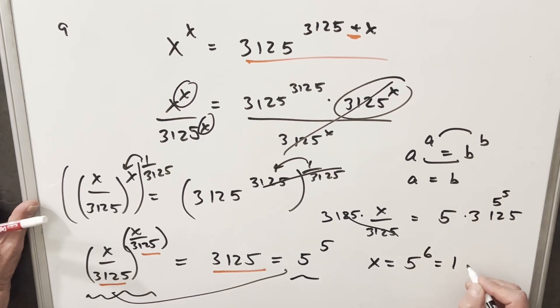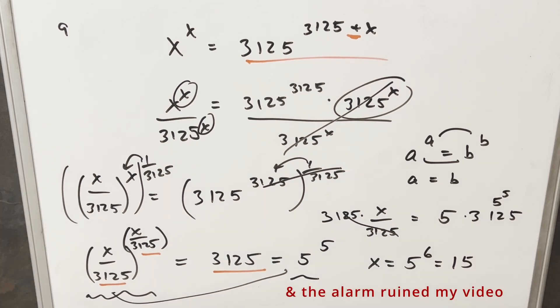Or we could multiply that out and we get 15625. And this is fine. We could leave our solution as 5 to the 6, or we could multiply it out and we get 15625.